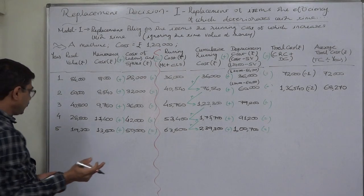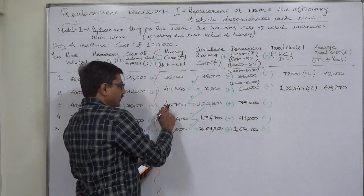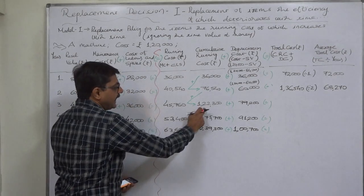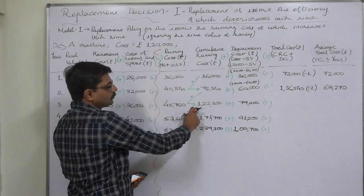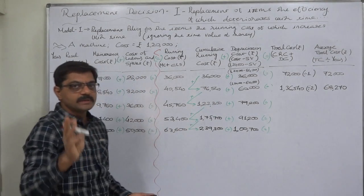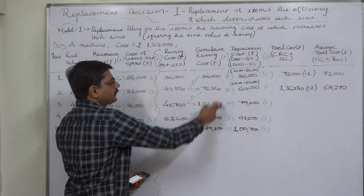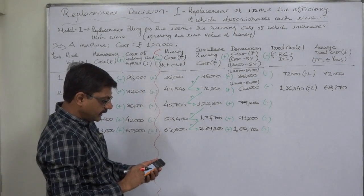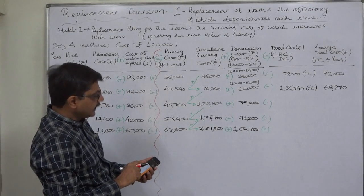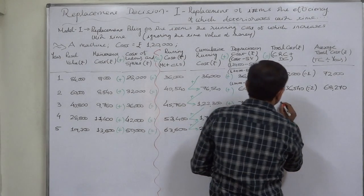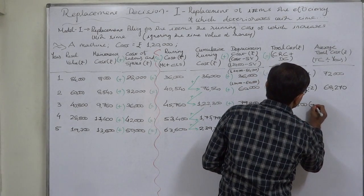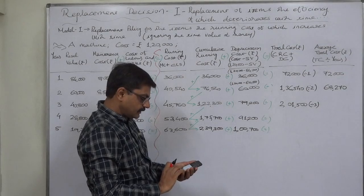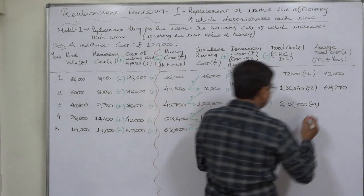For three years: the running cost in the third year is forty-five thousand seven hundred and sixty. Adding it to the two-year total gives cumulative running cost of one lakh twenty-two thousand three hundred. Adding the depreciation cost of seventy-nine thousand two hundred gives a total cost of two lakh one thousand five hundred. Divided by three years, the average cost is sixty-seven thousand one hundred and sixty-seven.